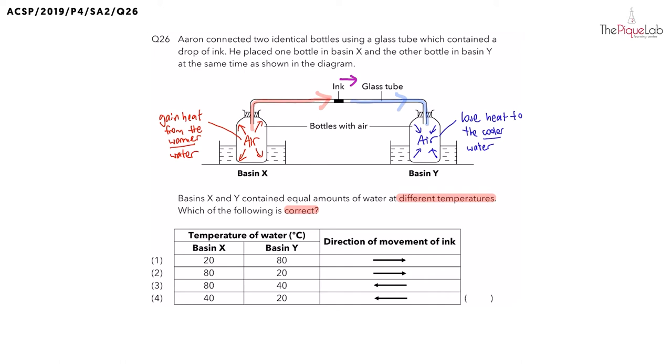So, with that understanding, we are ready to take a look at the options. For options one and two, we can see that the ink droplet is going to move towards the right. Remember, for the ink droplet to move to the right, this means that the water in Basin X must be warmer. So, let's take a look at option one. Is 20 degrees Celsius warmer than 80? No, which means option one is out. What about for option two? Is 80 degrees Celsius warmer than 20 degrees Celsius? Yes, which means option two is the answer.